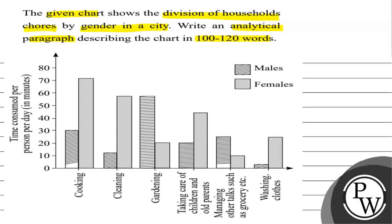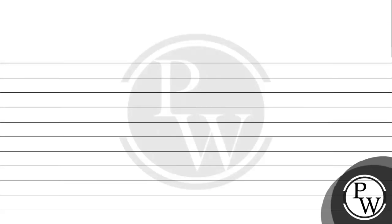This graph gives information on the time spent by male and female on household works. This is the pattern for male and this pattern displays the females. The categories are cooking, cleaning, gardening, taking care of children and old parents, managing other tasks such as grocery etc., and washing clothes. This is the time consumed per person per day in minutes.